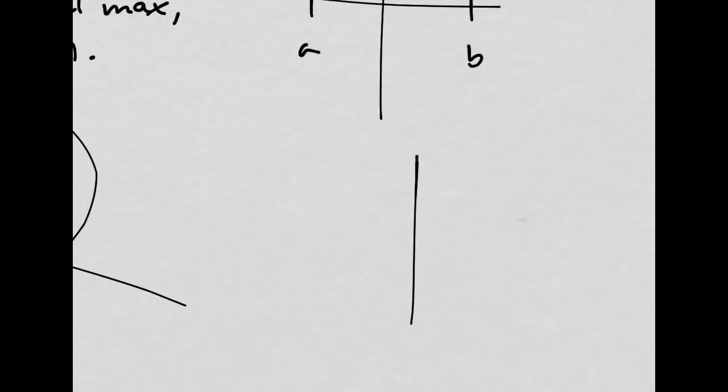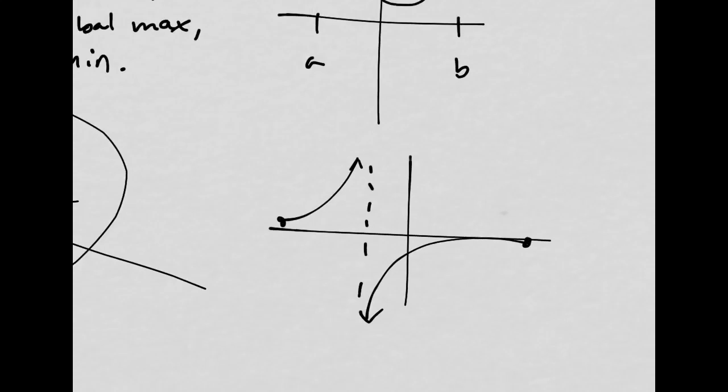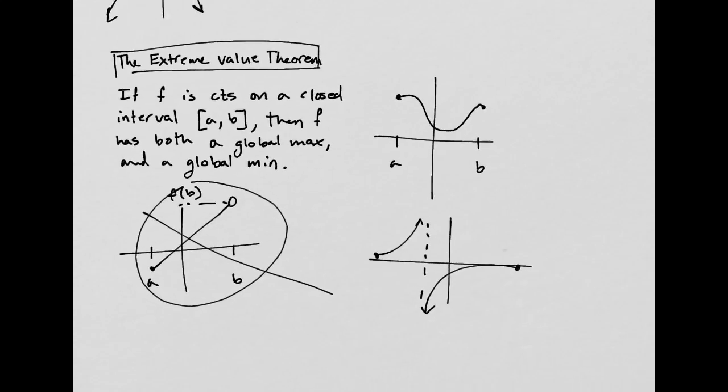If you had a discontinuity, say you had something like this that was closed and closed, here we would neither have a maximum nor a minimum just because of those two things. However, this also still follows the extreme value theorem just because we're saying that it's continuous on a closed interval and this is discontinuous on that closed interval.